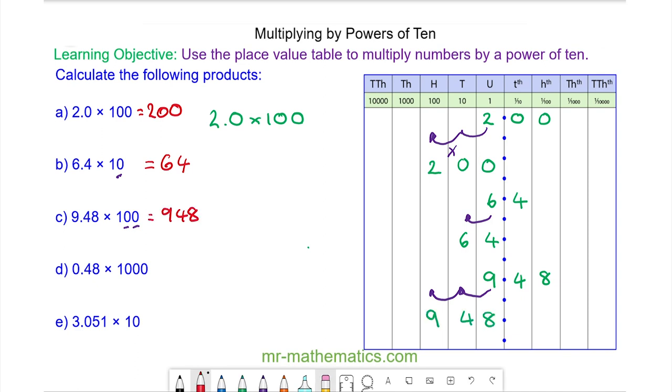For question d, 0.48, every digit moves to the left by three places. So we have 0 in the thousands, 4 in the hundreds, and the 8 in the tens, and here we have a placeholder which moves into the units. So this is 480.